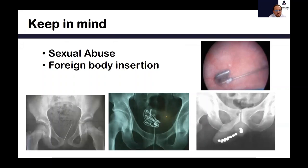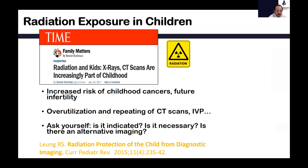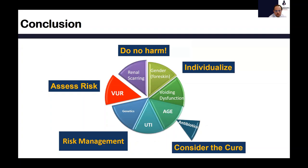We must always keep in mind sexual abuse in a child with unexplained recurrent UTIs — a high index of suspicion is warranted, as some children insert foreign bodies into their genitalia. Regarding radiation exposure in children: there is increasing public awareness about risks of radiation. In the management of recurrent febrile UTI, we must keep in mind the increased risk of childhood cancers and effects on future fertility. We are probably over-utilizing some tests, so we must always ask: is it indicated, is it necessary, and is there an alternative imaging modality?